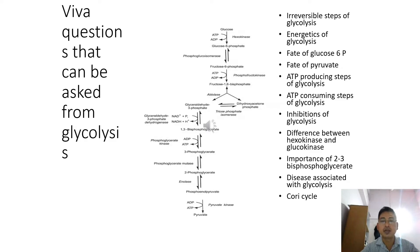But in the process we also utilized 2 ATPs in two reactions, so net ATP production will be 7.